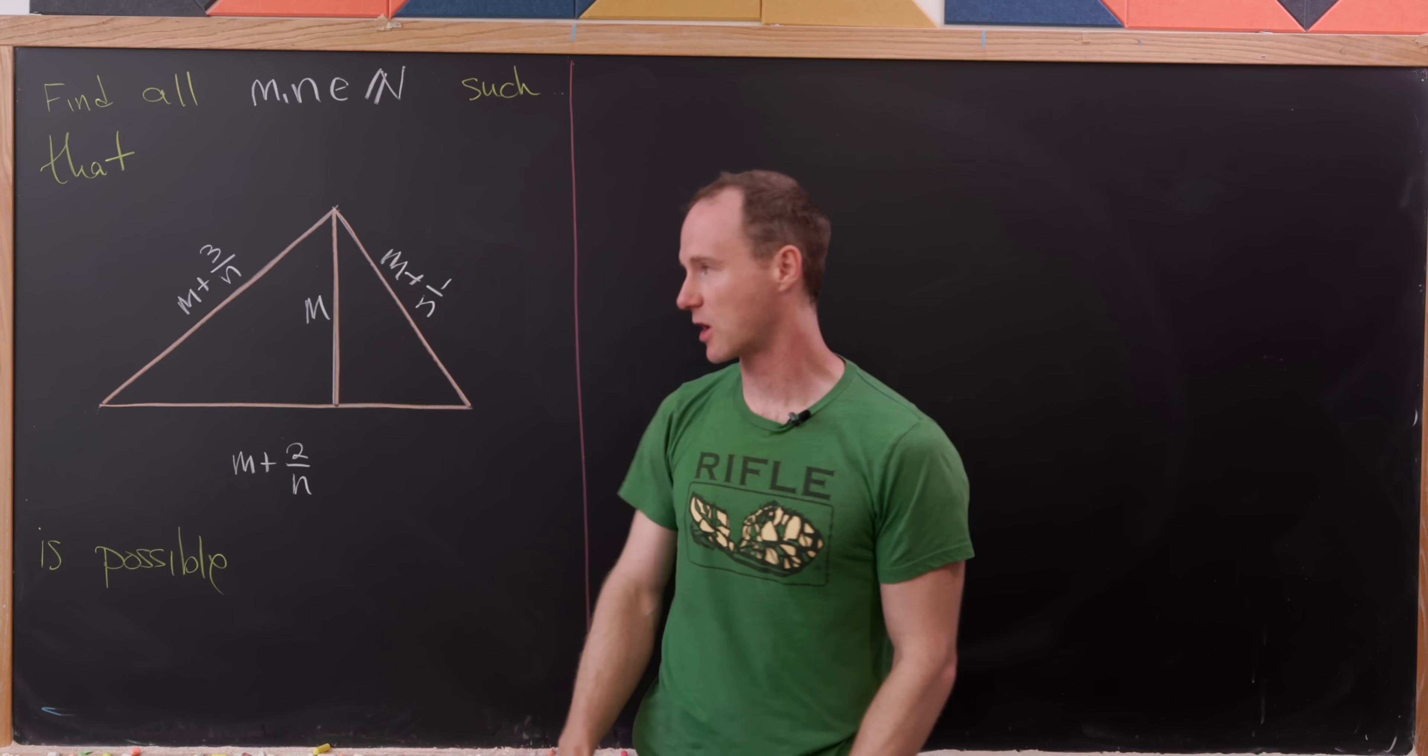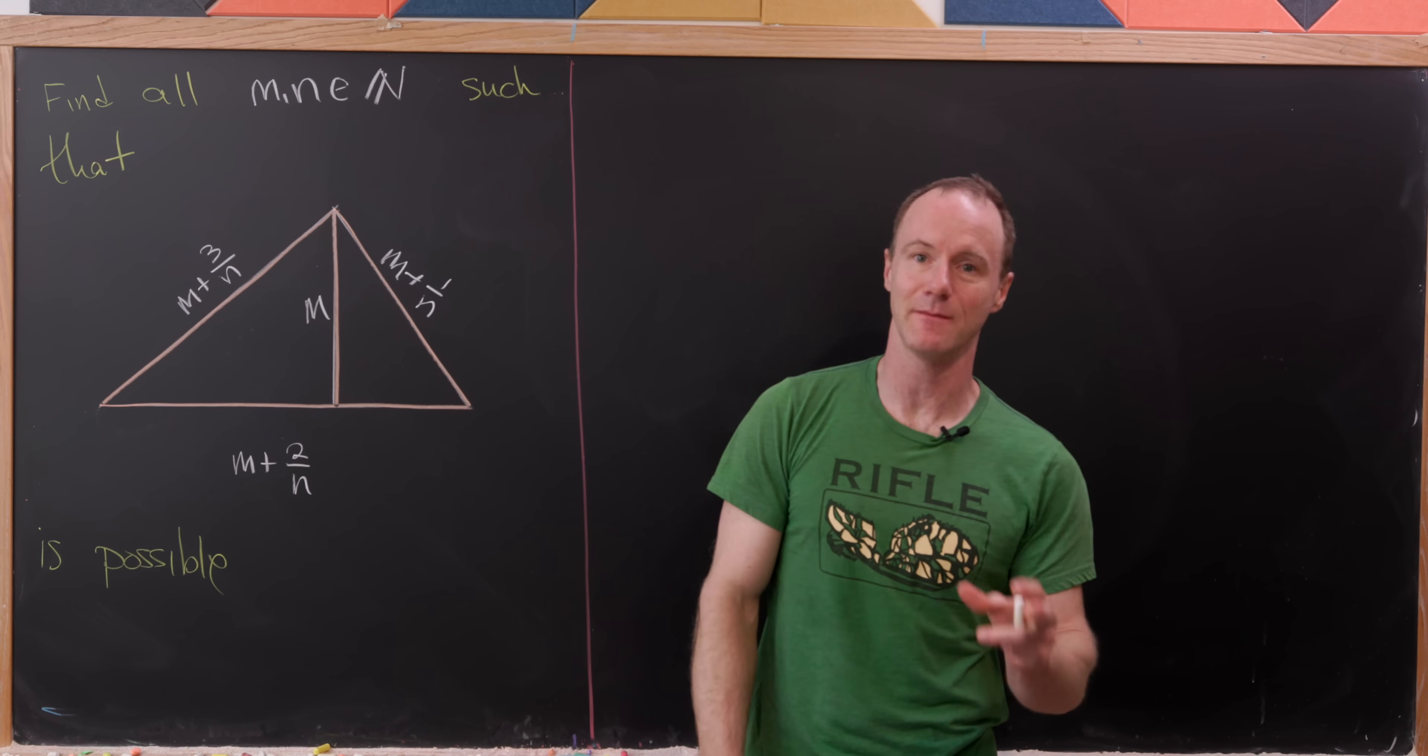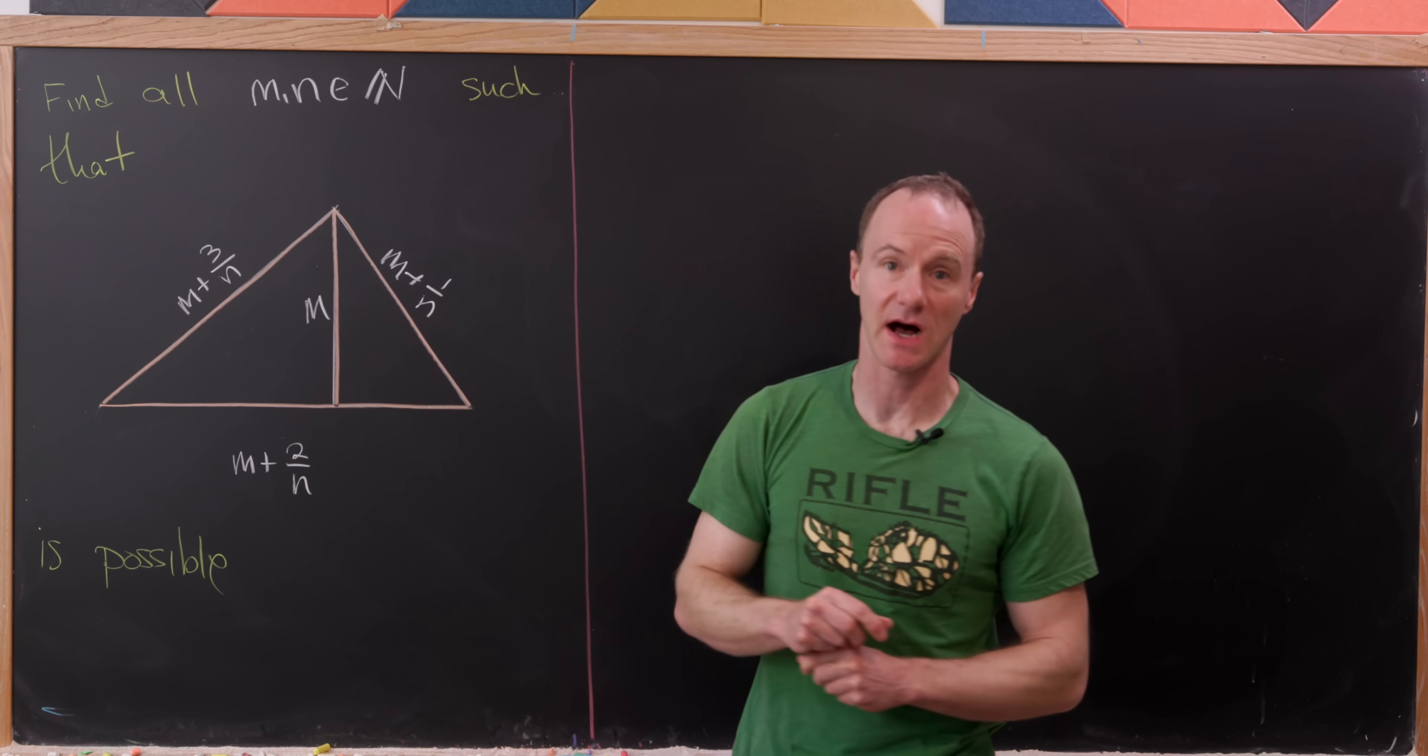Today we've got a pretty cool geometry problem. So our goal is to find all natural numbers m and n so that this triangle is possible.